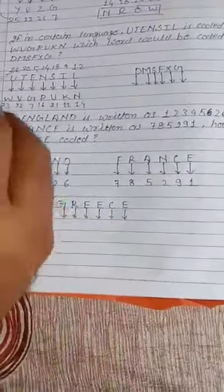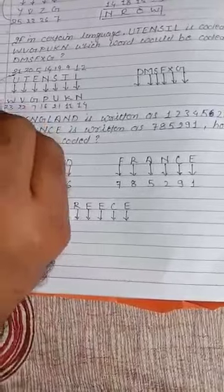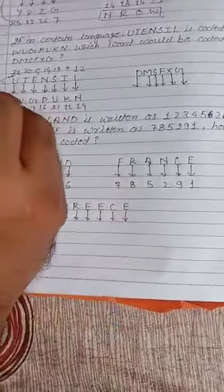Now we can observe that 21 becomes 23, that means plus 2.